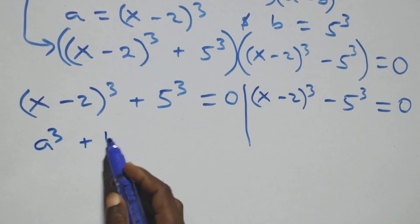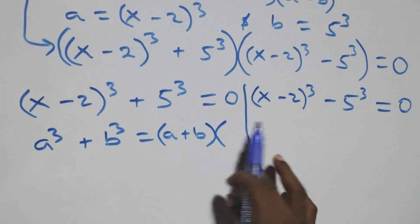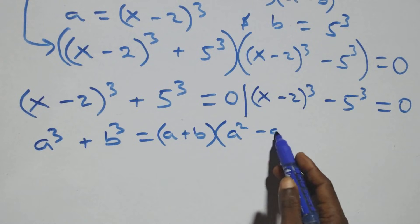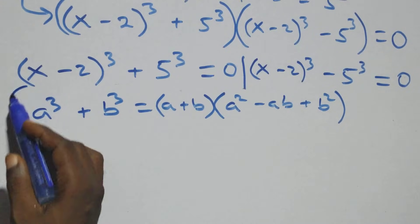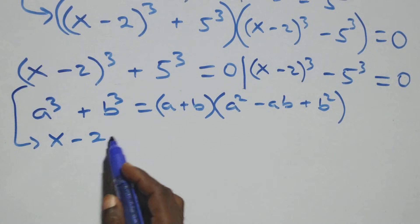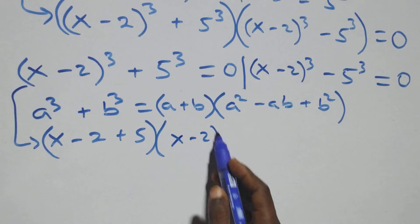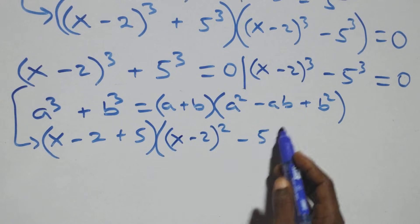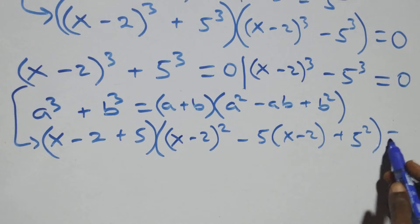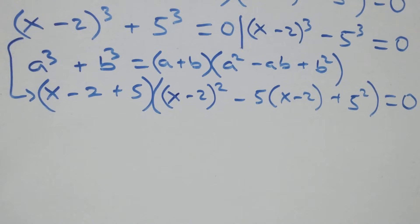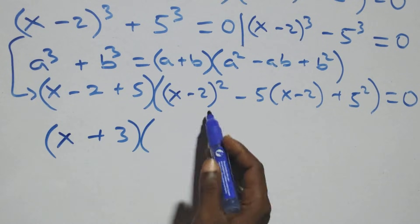For the first case, we apply the sum of cubes identity: a³ plus b³ equals (a+b)(a² minus ab plus b²). With a = (x-2) and b = 5, the factored form gives us (x minus 2 plus 5) times the bracket, which simplifies to (x+3) times the bracket, equals 0.